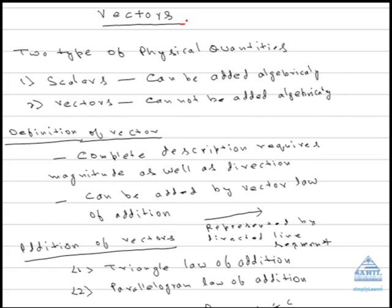Vectors. We have large number of physical quantities. Take the example of mass. Mass can be added algebraically, that is like a number. Suppose we have two bodies of mass 1 kg and 2 kg, then net mass is 1 plus 2, that is 3 kg.